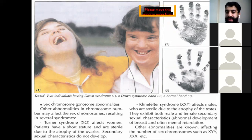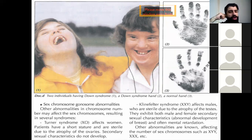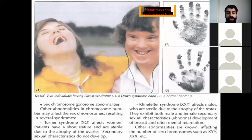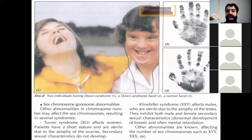One gonosomal syndrome is Turner syndrome — XO — which affects women. In Turner syndrome we have only one sex chromosome: a single X with no second chromosome. The chromosomal formula is 2N−1 = 45, comma, X0. Patients have a short stature, are sterile due to atrophy of the ovaries, and secondary sexual characteristics do not develop.